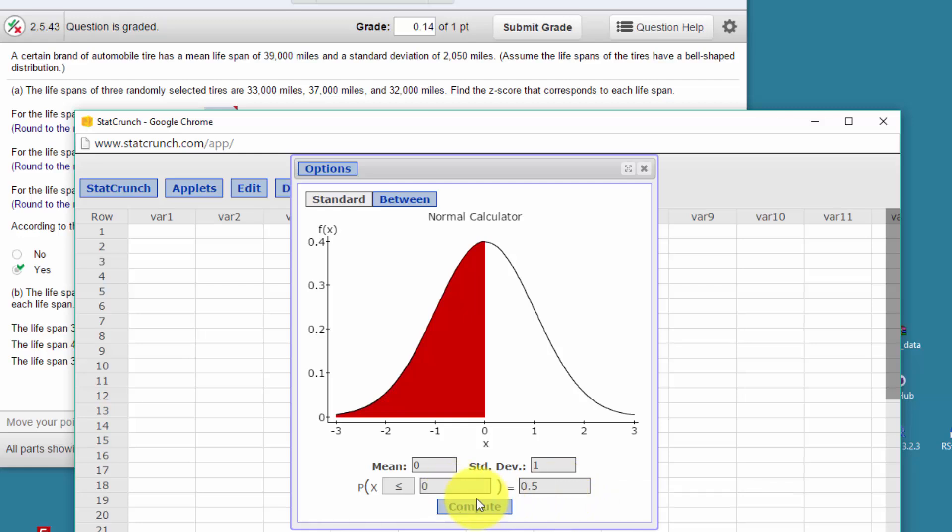Or we can put in the x value—the z value, I'm sorry—and get the probability. In this case, to the left of that value of x or z, but in this case we're trying to find the z values and we're given x's.